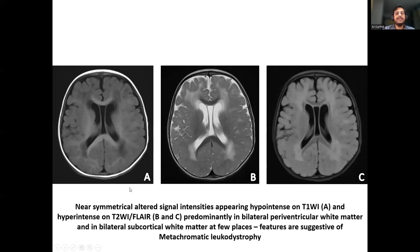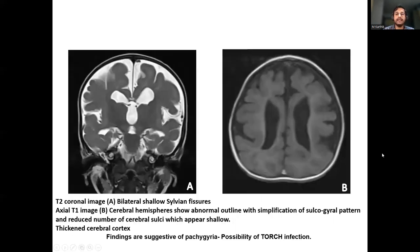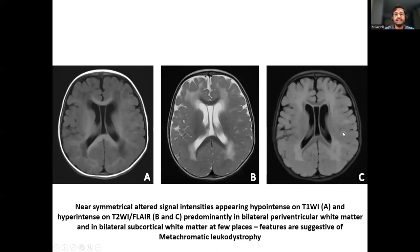Near-symmetrical altered signal intensities appearing hypointense on T1-weighted imaging and hyperintense on T2-weighted imaging and FLAIR, predominantly in the bilateral periventricular and subcortical white matter, were features suggestive of metachromatic leukodystrophy.